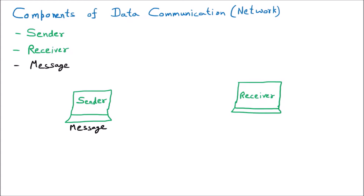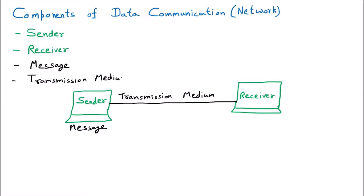Now, how does the sender send to the receiver? There should be some medium. That medium can be wired or wireless — it is not compulsory. There should be one medium, and we call it the transmission medium. The transmission medium is what transmits the data, and it is the next component of data communication.